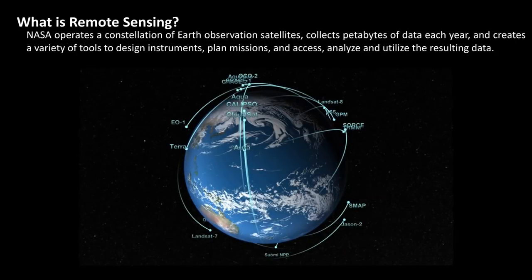Now for those of you on this webinar, it may not be a surprise, but many people don't understand that NASA actually has a robust Earth science program. NASA operates a large constellation of Earth observation satellites. We collect a tremendous amount of data each year, and our scientists and engineers create a variety of tools to help people design instruments, plan missions, and access, analyze, and utilize the data that results from those missions.